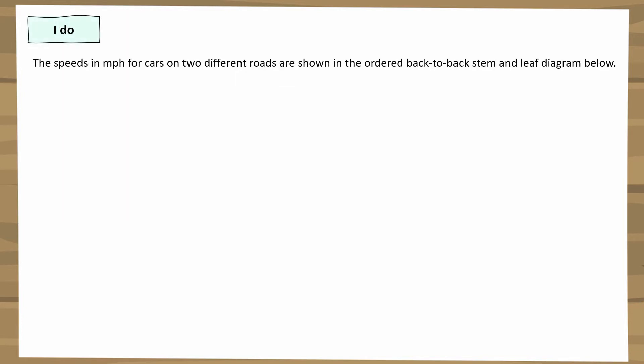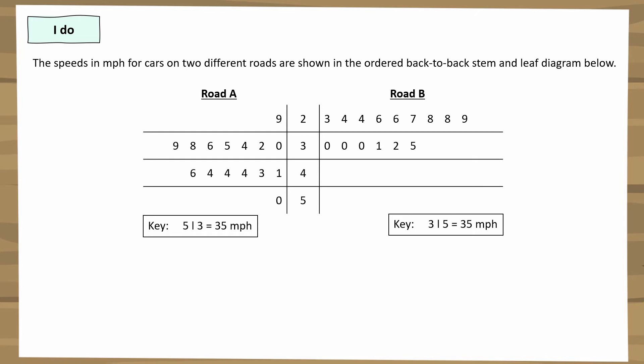Here's an example. The speeds in miles per hour for cars on two different roads are shown in an ordered back-to-back stem and leaf diagram. Road A's speeds are on the left and Road B's are on the right, with two keys at the bottom.